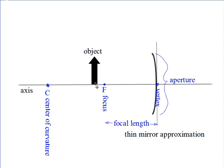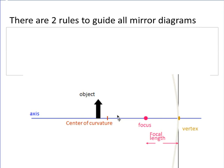We always put the base of the object on the axis, with its head pointing up. The distance from the vertex to the object is called the object distance. All distances are measured from the vertex.